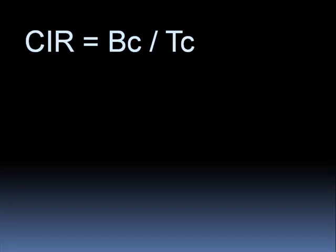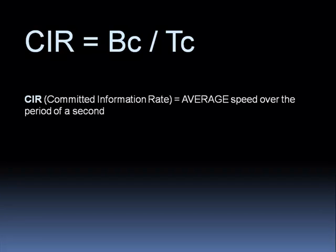Here's the overriding formula: the CIR (Committed Information Rate) equals Bc divided by Tc. Let's talk about these different variables. The CIR, the committed information rate, is the average—and I emphasize average—speed over the period of a second.